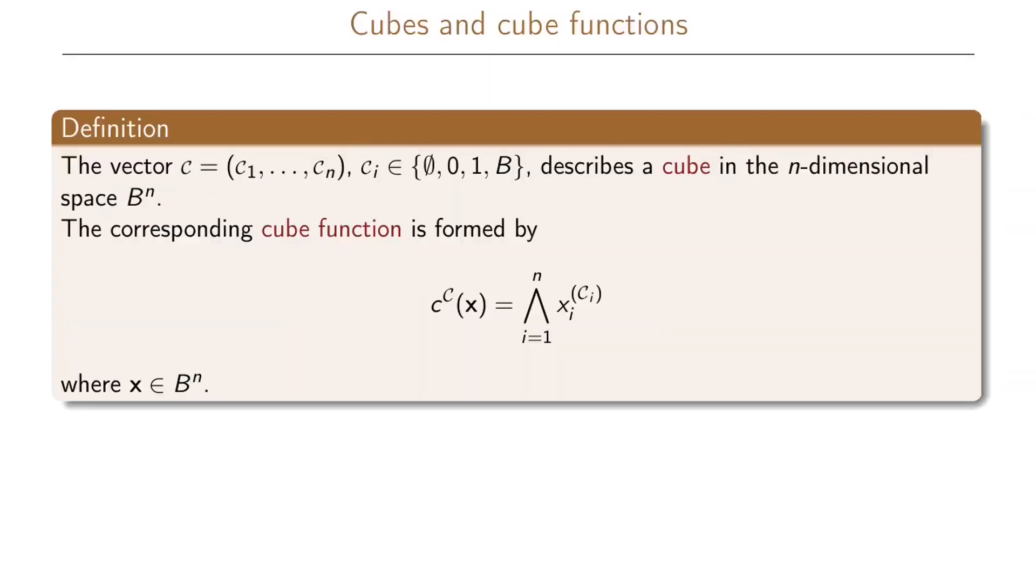We will also define cubes and cube functions. So the vector c, which is c_1 to c_n, where each of the entries will be either the empty set, the set consisting of 0, the set consisting of 1, or B, this will describe a cube in the n-dimensional space. The corresponding cube function will be formed using an AND product of our lattice exponents.